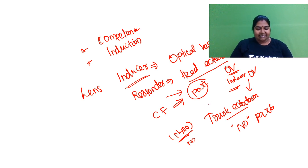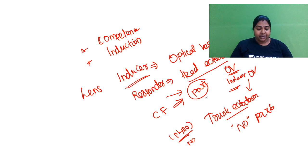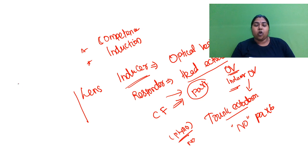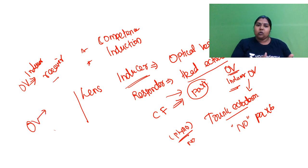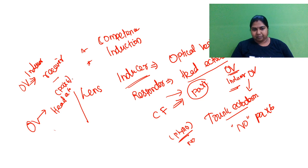The receiver must be only the head ectoderm because it contains PAX6. In the trunk, there is no PAX6, so it will not receive the signal from the vesicle. As Rohan points out — yes, cells that have a particular receptor for a hormone or factor are competent for that hormone or factor. The optical vesicle gives the signal, but only the head ectoderm, containing PAX6, can receive it.